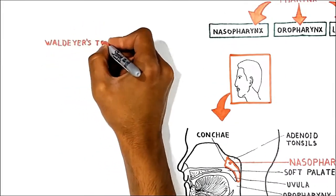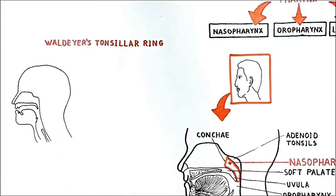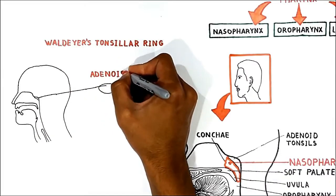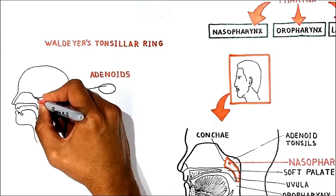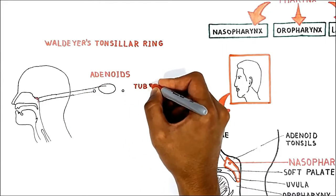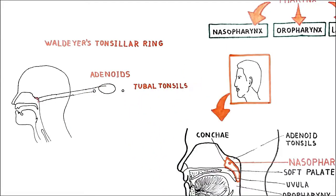Waldeyer's tonsillar ring is a ring of lymphoid tissue located in the nasopharynx and oropharynx. It includes one or two pharyngeal tonsils, also known as adenoids, and two tubal tonsils which are located posterior to the opening of the eustachian tube on the lateral walls of the nasopharynx.